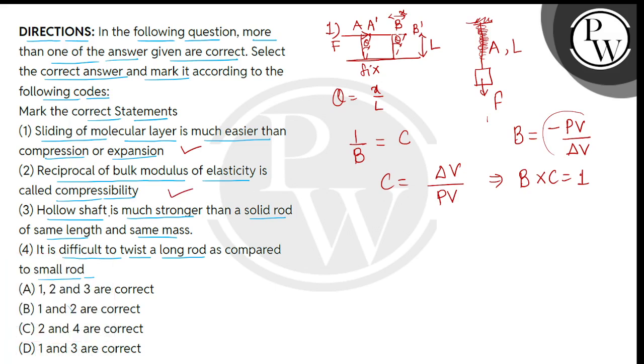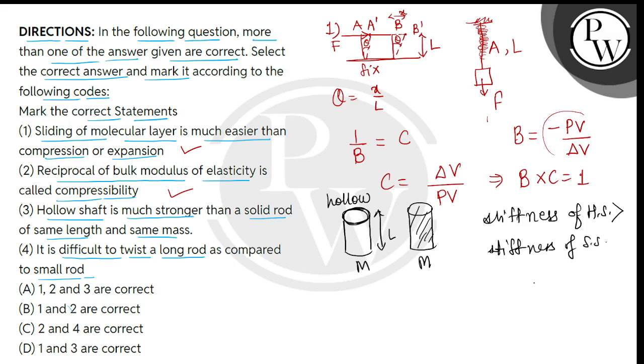Now, we see statement number 3, which is said that hollow shaft is much stronger than a solid rod of same length and same mass. So, we consider first a hollow shaft, which is removed from the center. So, this is the hollow cylinder. So, this is the hollow shaft. So, the stiffness of the hollow shaft will be greater than the stiffness of the solid shaft.